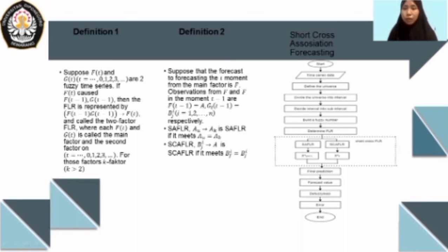In this research we use triangular fuzzy numbers. The next step is to determine the FLRs. We use two kinds of FLRs: SAFLR and SCAFLR, or what we call short cross FLRs. Then final prediction—we know the forecast value or defuzzification, and then we need to find out the error.